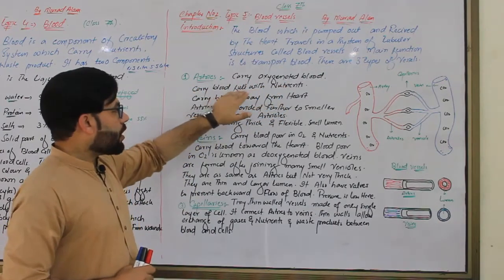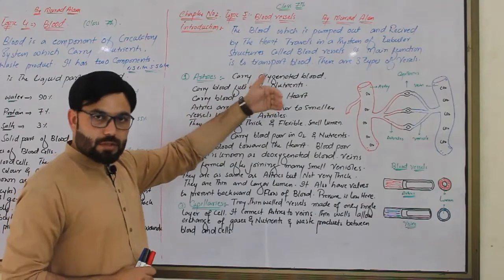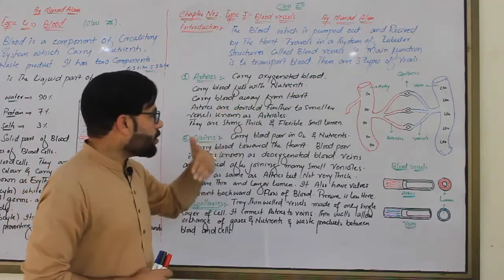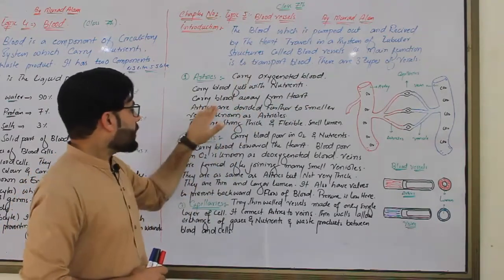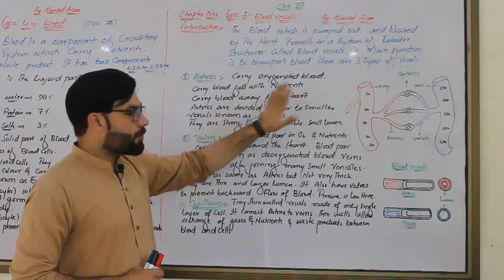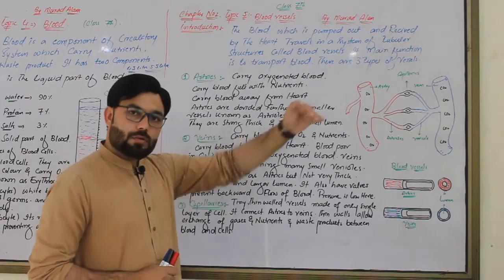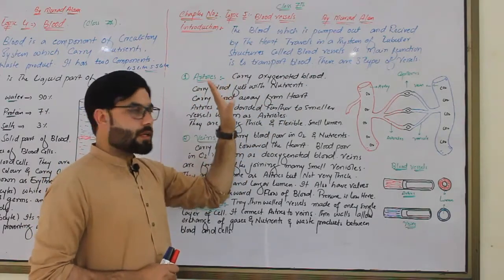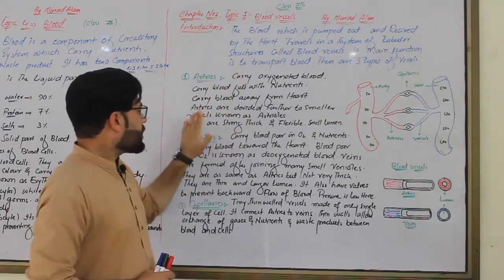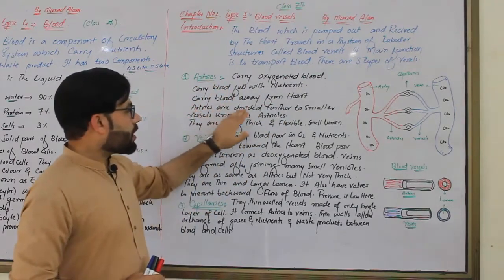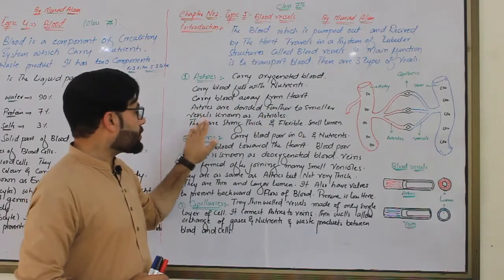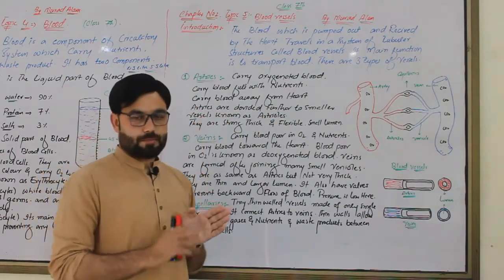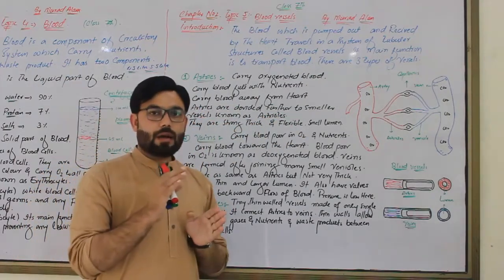Arteries carry oxygenated blood and nutrients circulated in the body, away from the heart. Arteries are divided further into smaller vessels known as arterioles.